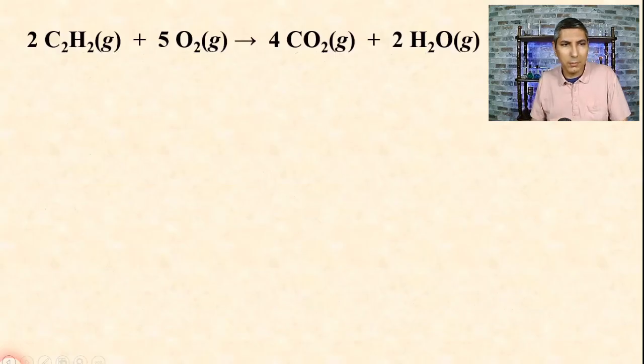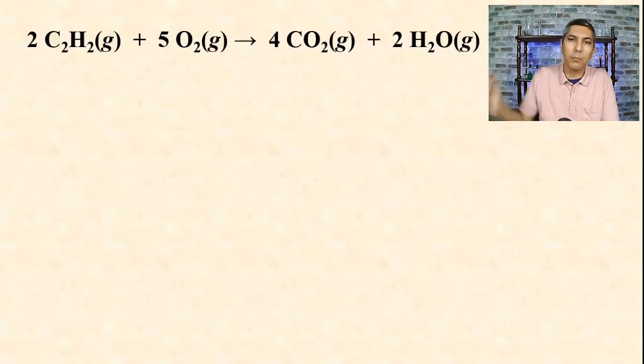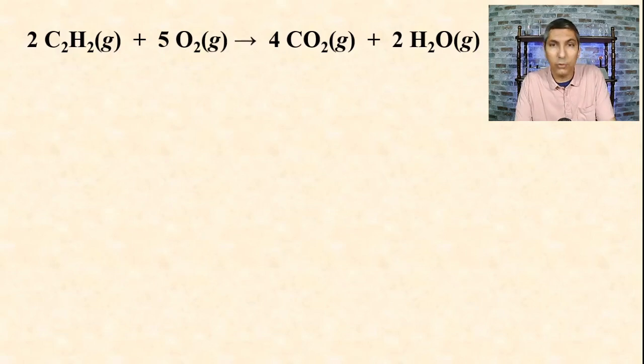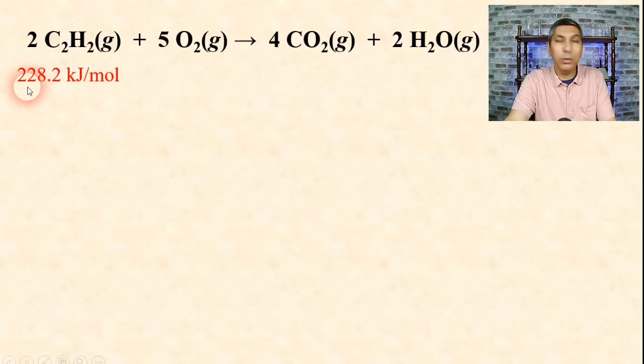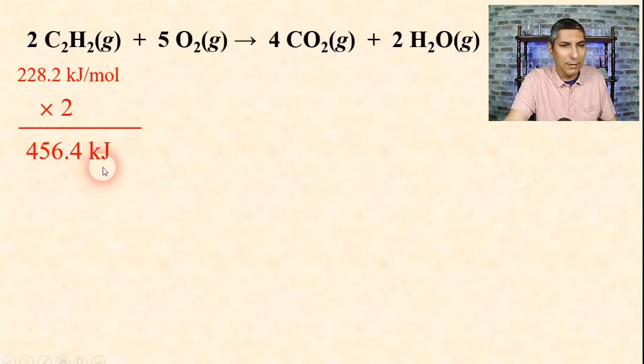Let's try another example. Here we have a combustion reaction: 2 moles of C2H2, which is acetylene gas, being burned in oxygen. Once again, we need those enthalpies of formation. You can use that chart in the description below, the appendix of your textbook, or you can just Google these. The enthalpy of formation of C2H2 gas is 228.2 kilojoules per mole. Since there are 2 moles, we have to times it by 2. When we multiply that by 2, we find that's 456.4 kilojoules.